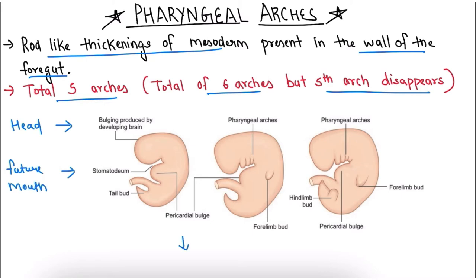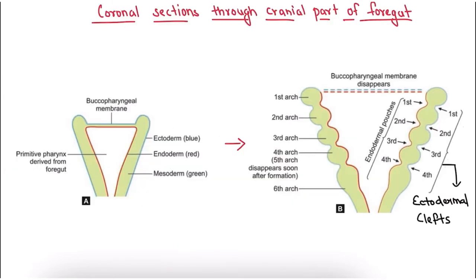The pericardial bulge represents the future thorax. As we can see there is no neck in this embryo, so the neck would be formed by elongation between stomatodeum and pericardial bulge. This elongation is mainly due to appearance of a series of mesodermal thickenings, that is pharyngeal arches.